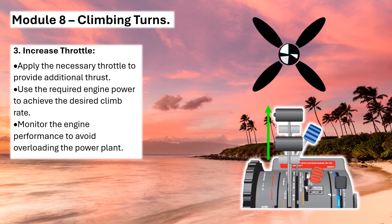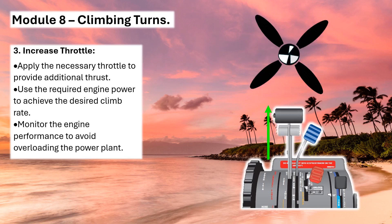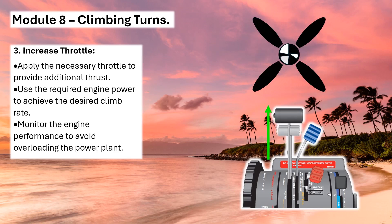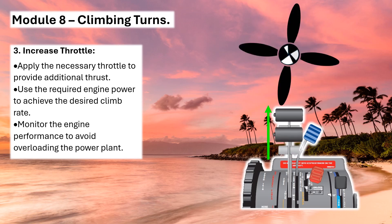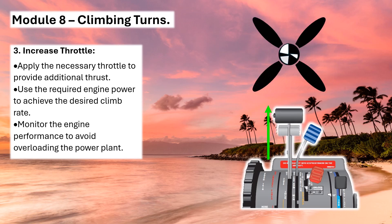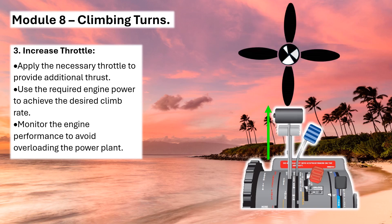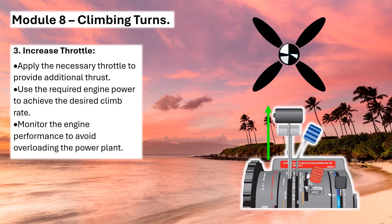3. Increase throttle – apply the necessary throttle to provide additional thrust. Use the required engine power to achieve the desired climb rate. Monitor the engine performance to avoid overloading the power plant.